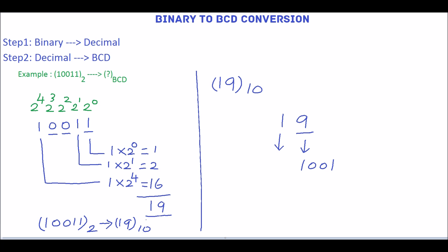Then the decimal digit 1 is equivalent of 0001. This is the BCD for the decimal number 19. So the binary number 10011 is equivalent to the BCD number 00011001.